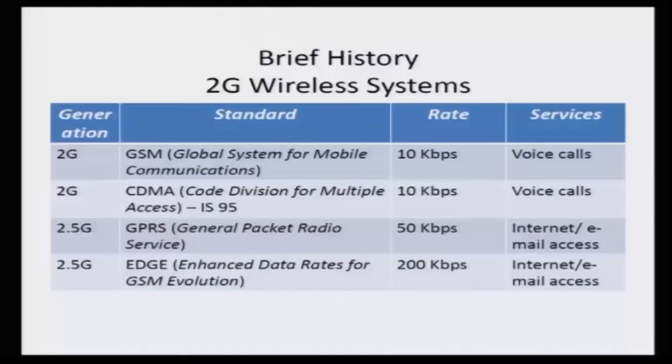To understand and motivate the content of this course better, let us start by looking at a brief history of wireless evolution. We have the 2G wireless communication systems such as GSM and IS95-based CDMA, or code division multiple access systems, which have a modest data rate of about 10 kilobits per second supporting basic voice call traffic. This subsequently led to the development of advanced technologies such as GPRS and EDGE, which led to a slight increase in data rate up to about 50 to 200 kilobits per second, supporting not only voice but also low data rate internet and email access applications.